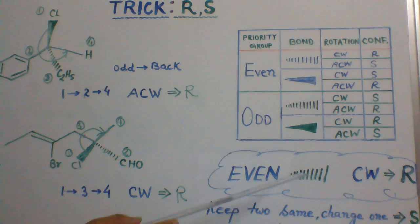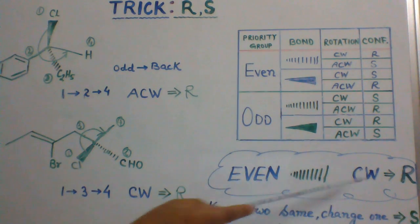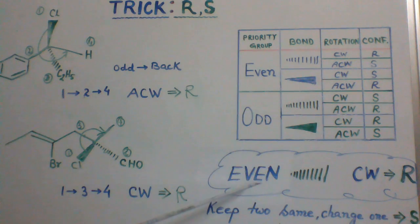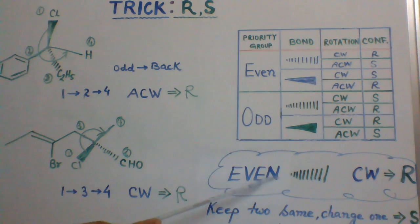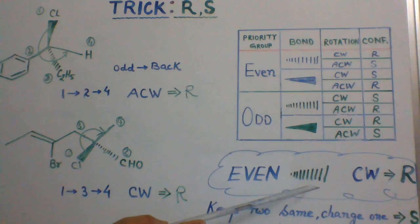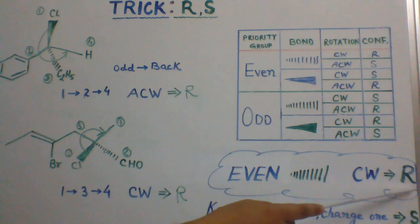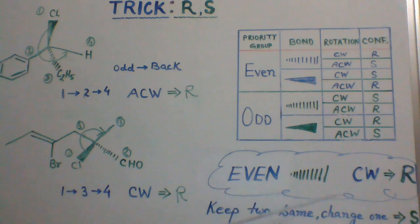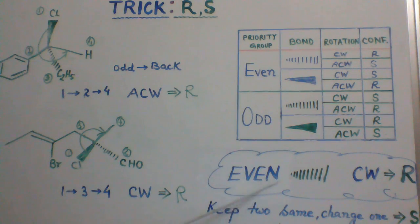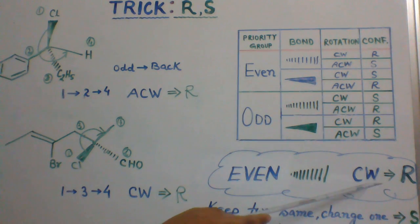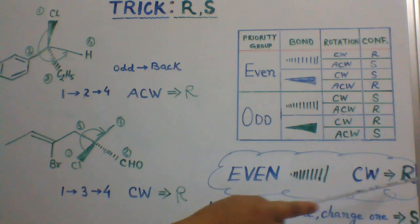Now, if you change any one of these three — say it is odd, thin line, clockwise — it will be S. Or say even remains the same but it becomes a thick line, clockwise — it will be S.